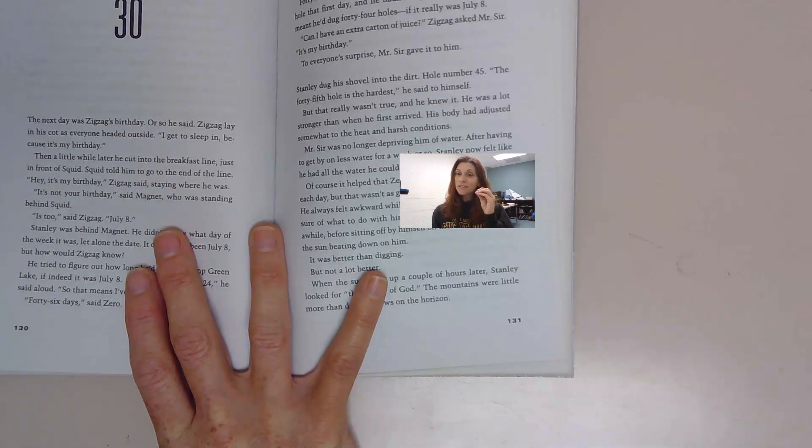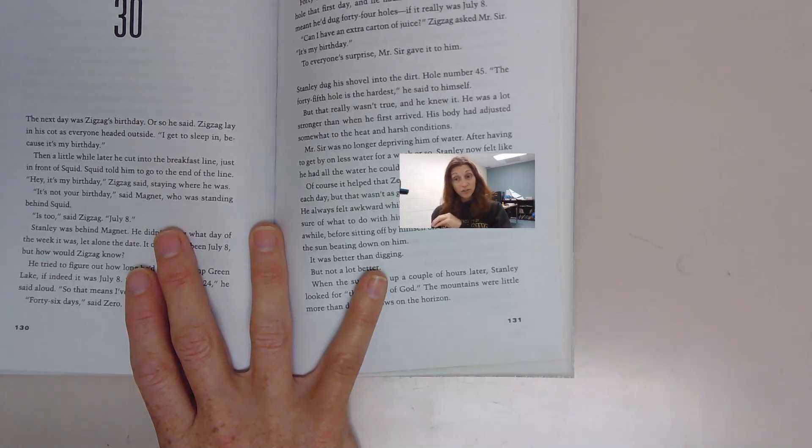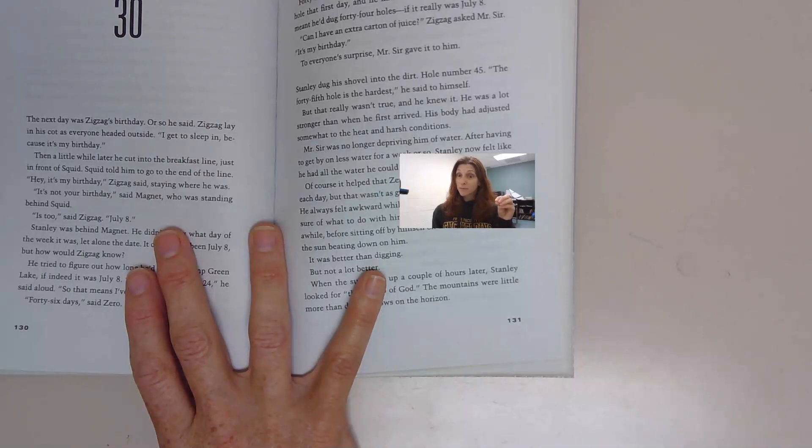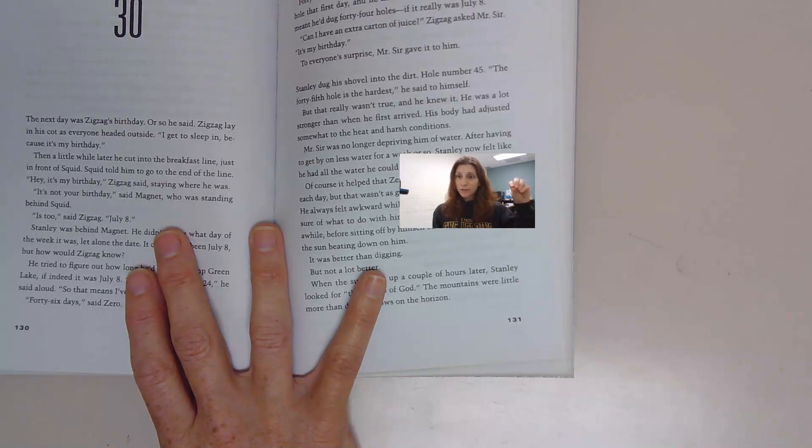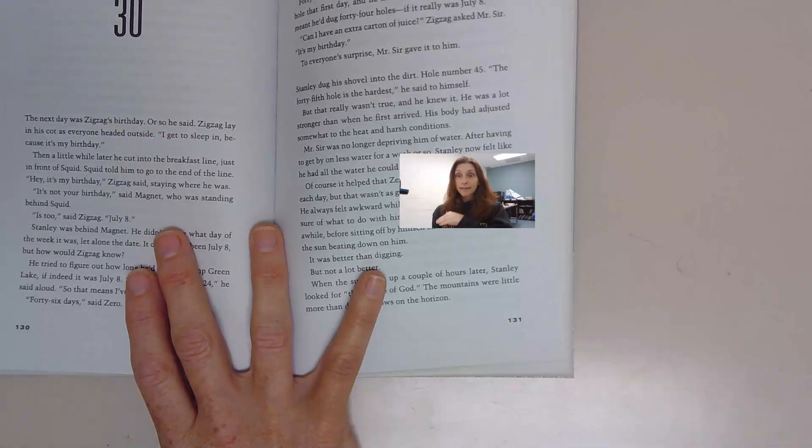So we're wondering if Hector is maybe a relation of Madame Zeroni. It's neat how all this stuff is connecting. So we see the connection between Madame Zeroni and Hector, and we see the connection between Madame Zeroni and Stanley's great great grandfather, and now Stanley and Hector.